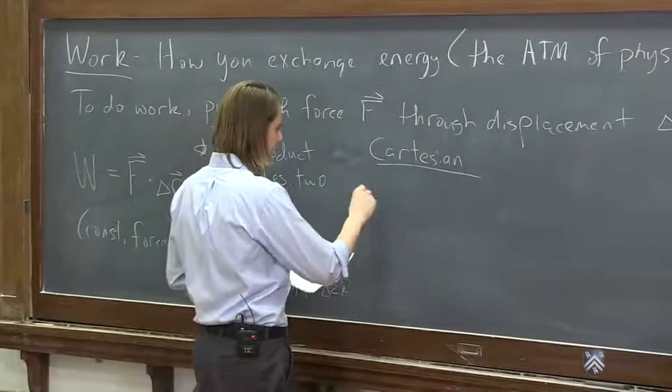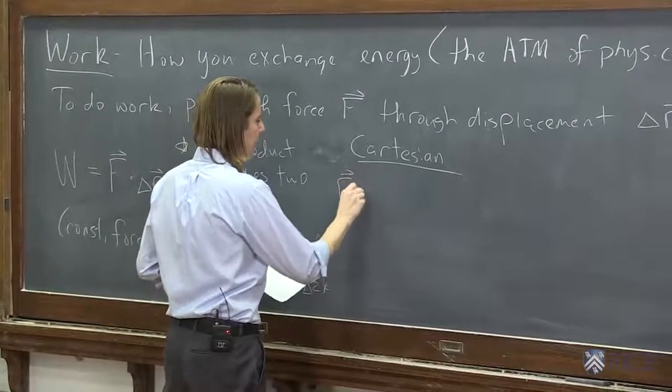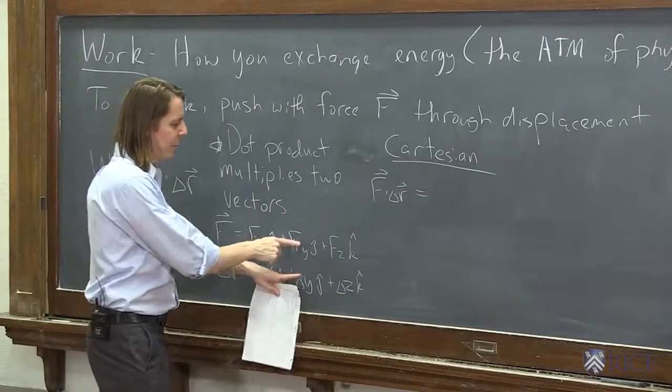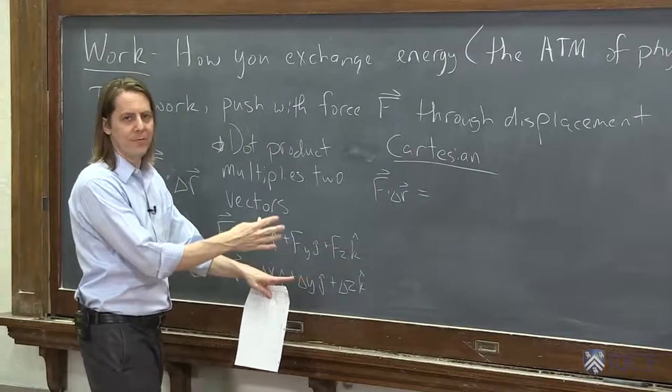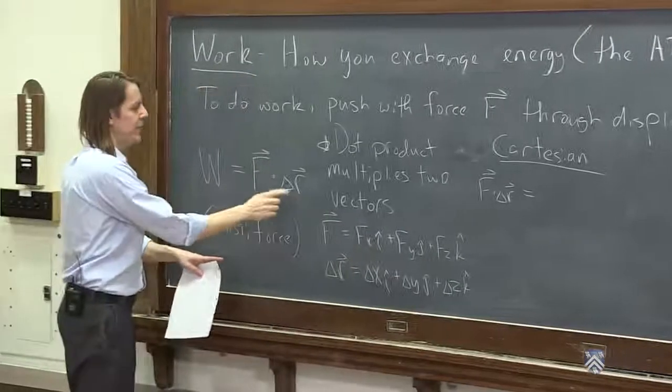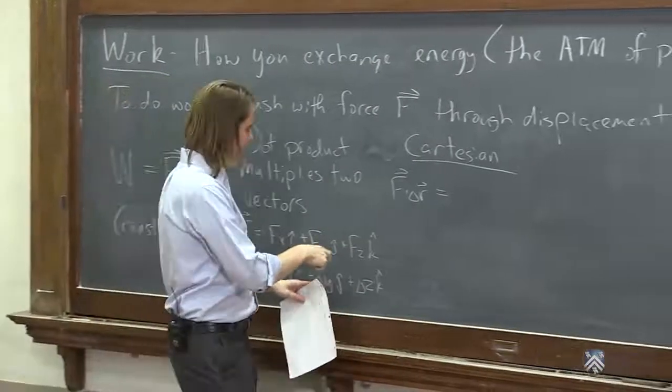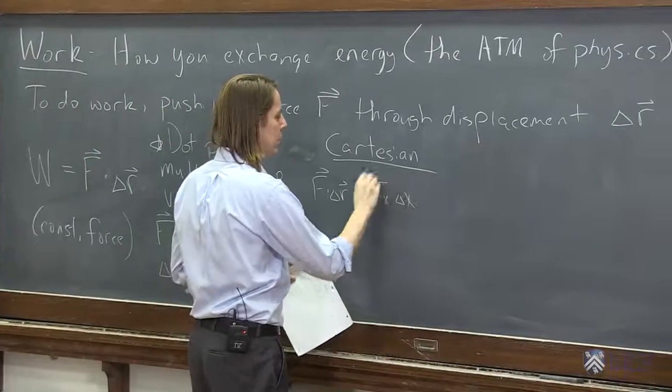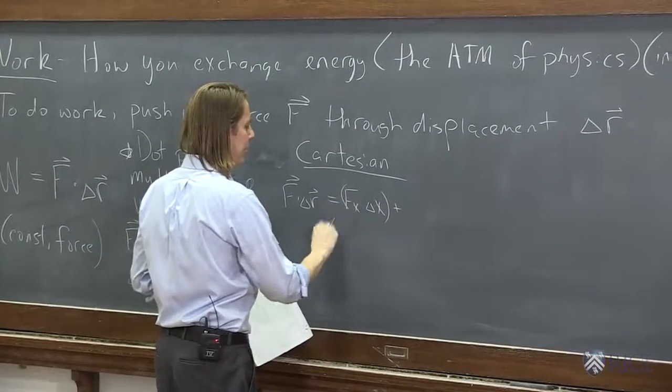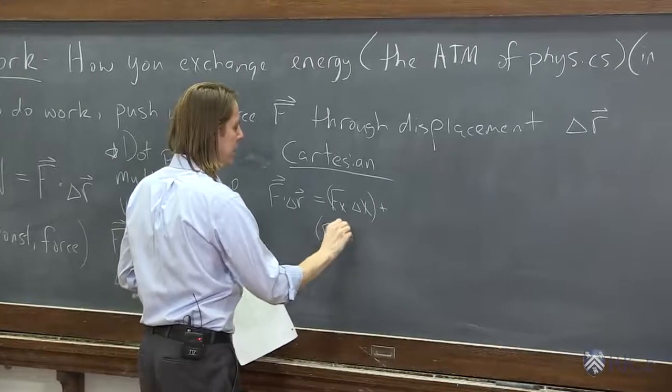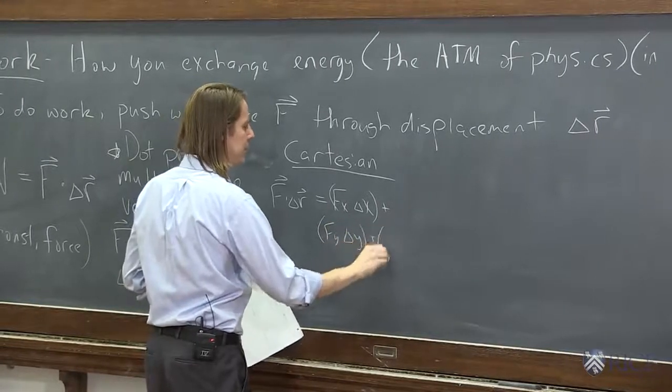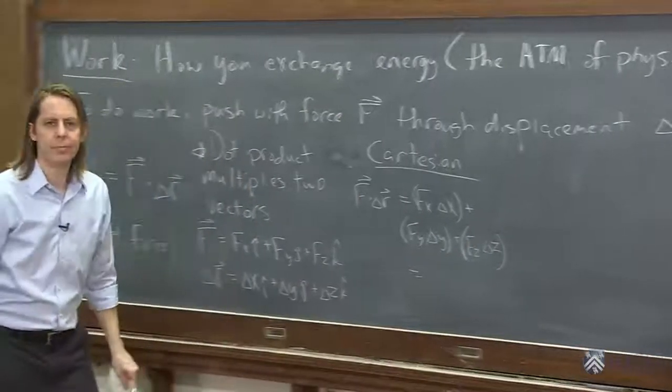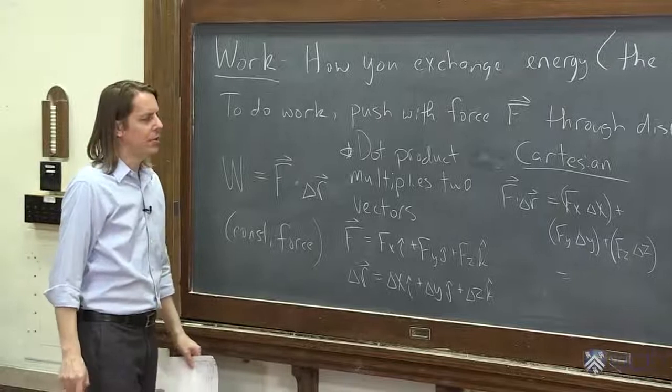The dot product F dot delta R is basically just multiply the X components plus the Y components plus the Z components, and it's no longer a vector. So a dot product of two vectors makes a scalar. It would be F_x times delta X plus F_y times delta Y plus F_z times delta Z. And whatever you get, that'll be a scalar and that'll be your dot product.